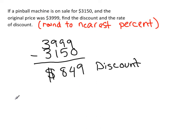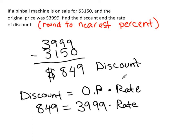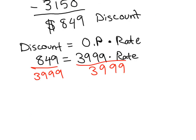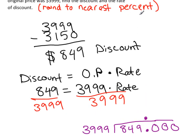Now we need to find the rate of discount. Using the formula: discount equals original price times rate. We know discount is $849 and original price is $3,999, so 849 equals 3,999 times rate. Divide both sides by 3,999 to isolate rate. This gives us a long division problem. We'll add extra zeros since the answer needs to be rounded to the nearest percent — we need at least three decimal places.